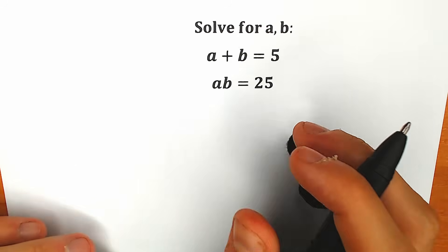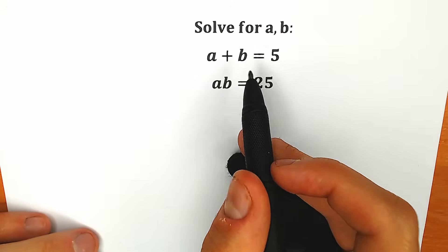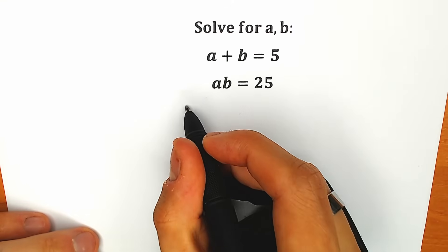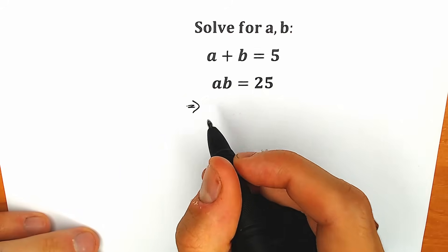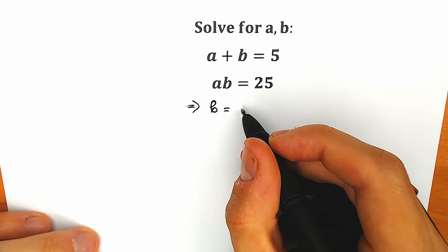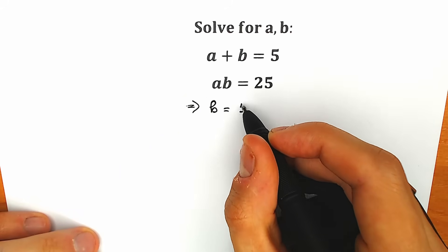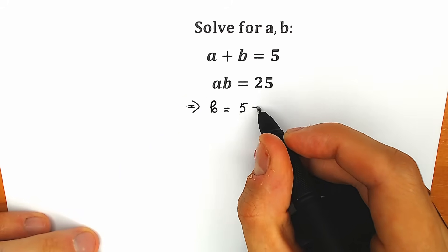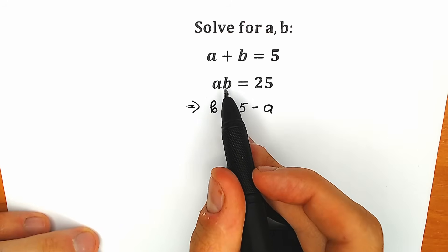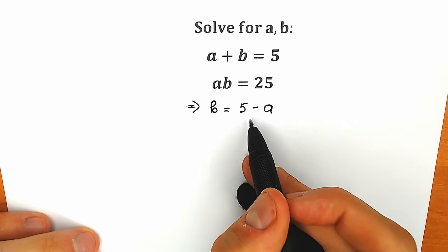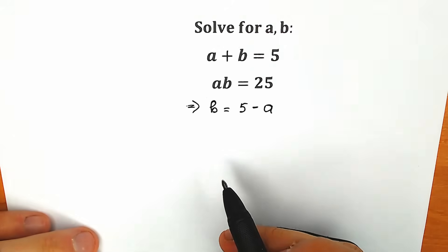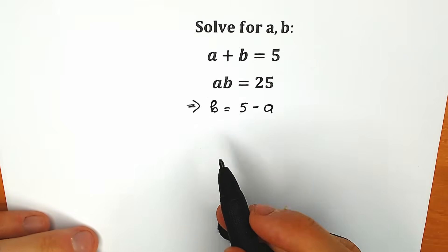I'm going to use the basic method. First of all, from the first equation I'm going to express b. So b from the first equation, b equals 5 minus a. So 5 minus a. And right now I'm going to plug in, instead of this b, I'm going to plug in this 5 minus a into the second equation.